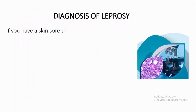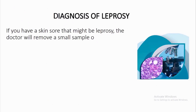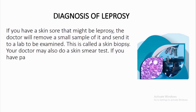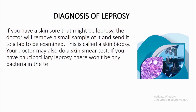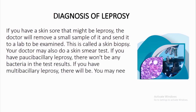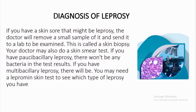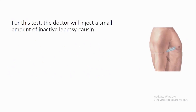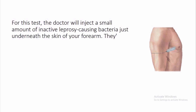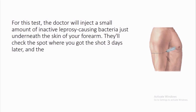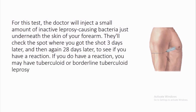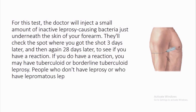Diagnosis of leprosy. If you have a skin sore that might be leprosy, the doctor will remove a small sample of it and send it to a lab to be examined — this is called a skin biopsy. Your doctor may also do a skin smear test. If you have paucibacillary leprosy, there won't be any bacteria in the test results; if you have multibacillary leprosy, there will be. You may need a lepromin skin test to see which type of leprosy you have. The doctor will inject a small amount of inactive leprosy-causing bacteria just underneath the skin of your forearm, then check the spot 3 days later and again 28 days later to see if you have a reaction. A reaction may indicate tuberculoid or borderline tuberculoid leprosy. People without leprosy or with lepromatous leprosy won't have a reaction to this test.